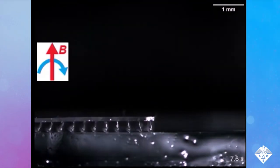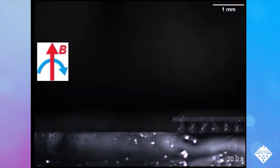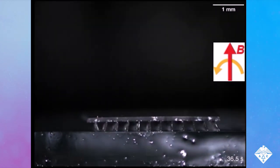Then the researchers flipped the array over, and it scuttled across a surface, reaching a maximum speed equivalent to a human's running speed. The robot reversed when the magnets spun in the opposite direction.